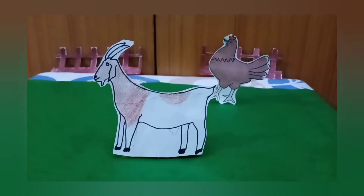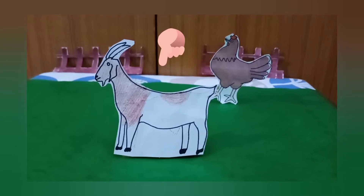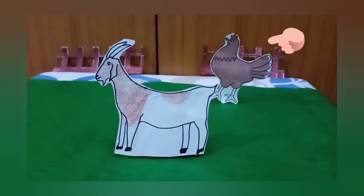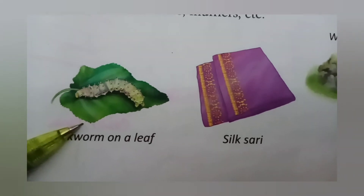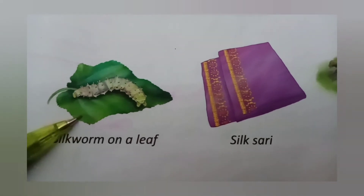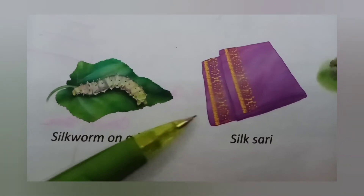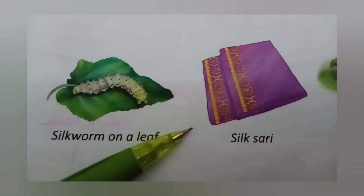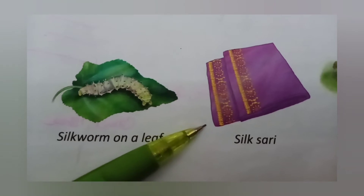We get meat from animals such as goats, chickens and fish. We get silk from silkworms. Silk is used to make clothes such as saris and scarves.